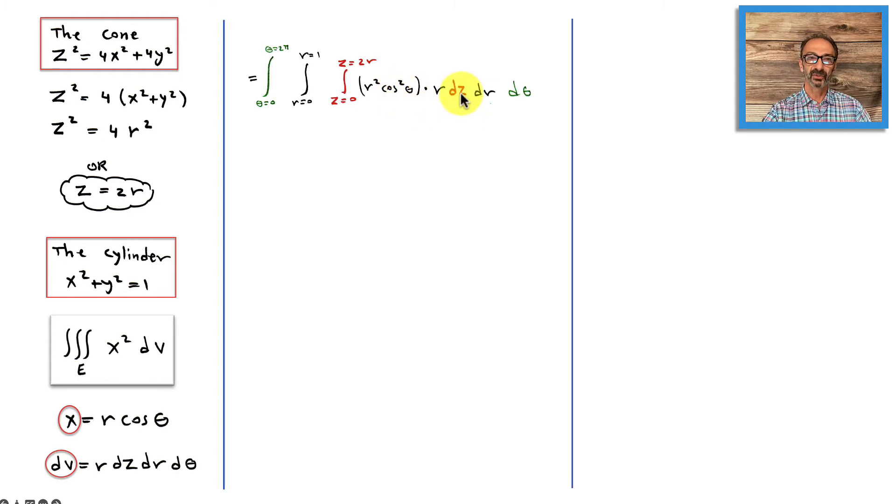And to integrate, I like to stay focused with red dz first. We'll take care of that, then we'll go black, which is dr, then green dθ. But the limits, the bounds right here, are very important. Remember the graph in 3D: the floor was the xy-plane, which is equal to zero. The top part is the cone. The cone is 2r because we simplified it right there. For the r, since we're going around and up to 1 because of the x squared plus y squared equals 1, r will go up to 1. And since we're going all the way around, theta goes from 0 to 2π.